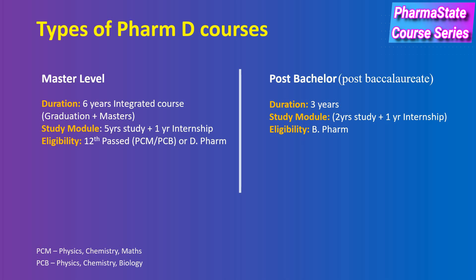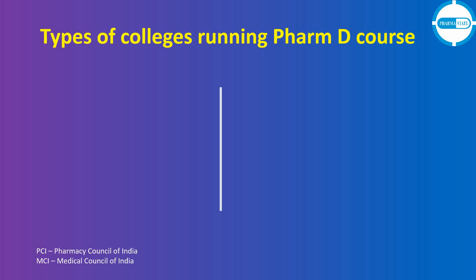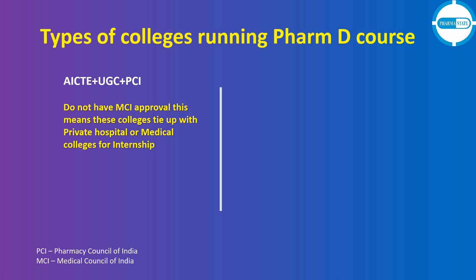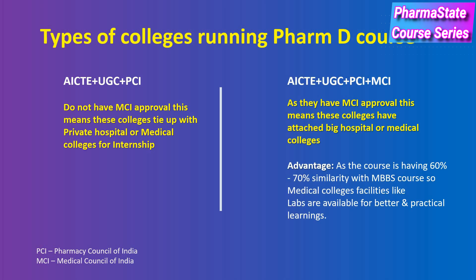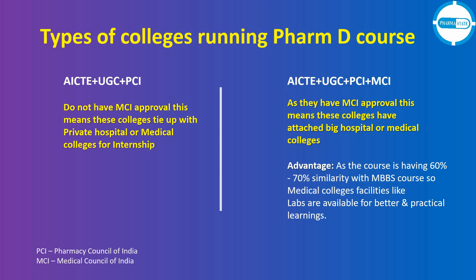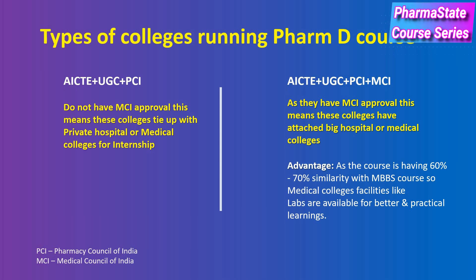There are two types of colleges running Pharm D courses. The first are those approved by AICTE, UGC, and PCI, which must tie up with private hospitals or medical colleges for internship. The second type are those approved by AICTE, UGC, PCI, and MCI, meaning these colleges have attached big hospitals or medical colleges. The advantage here is that since 60 to 70 percent of the course is similar to MBBS, medical college facilities like labs are available for better practical learning.